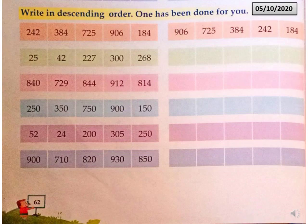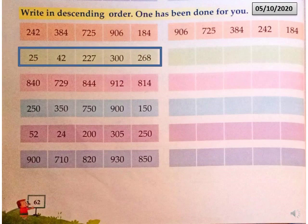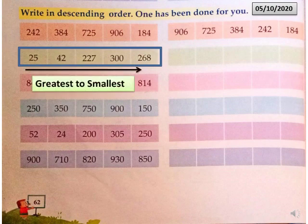Now read the second part of the question. The numbers are 25, 42, 227, 300, and 268. We have to arrange them in descending order, that is from greatest to the smallest.